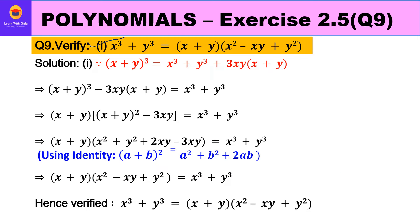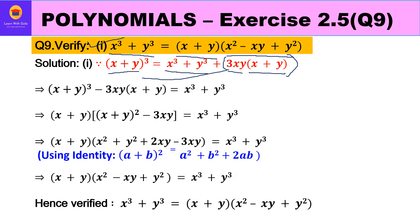For part 1, we have to verify x cube plus y cube is equal to (x plus y)(x square minus xy plus y square). Since we have x cube plus y cube with a plus sign, we use identity 6: x plus y whole cube equals x cube plus y cube plus 3xy into (x plus y). We take 3xy(x plus y) to the left hand side, making it minus 3xy(x plus y).